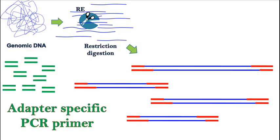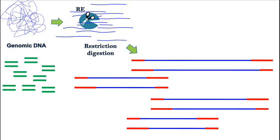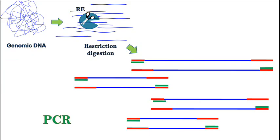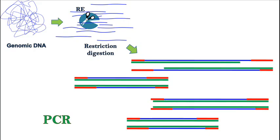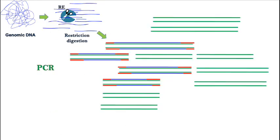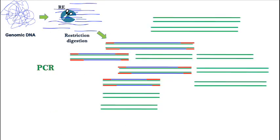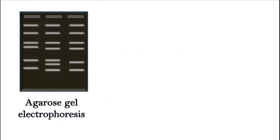Once the adapters have ligated, the mixture is subjected to PCR amplification using primers that are specific for the adapters. The PCR reaction amplifies the fragments into many copies that can be easily separated by agarose gel electrophoresis.